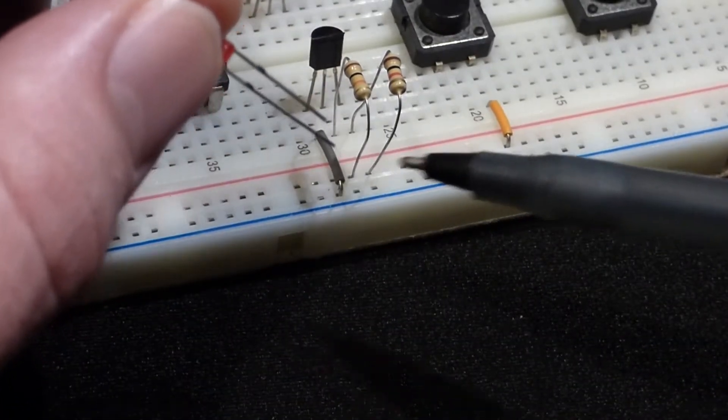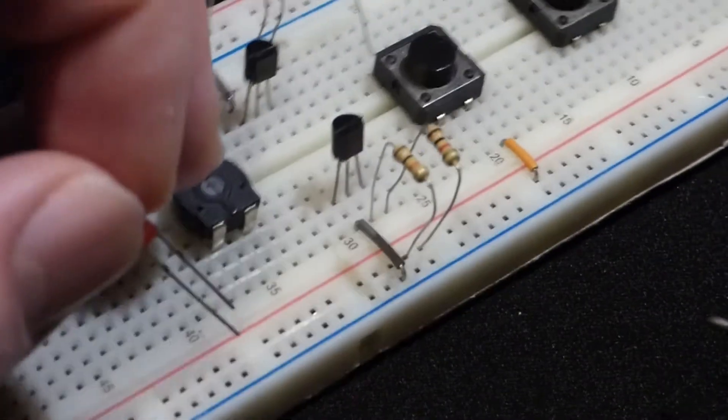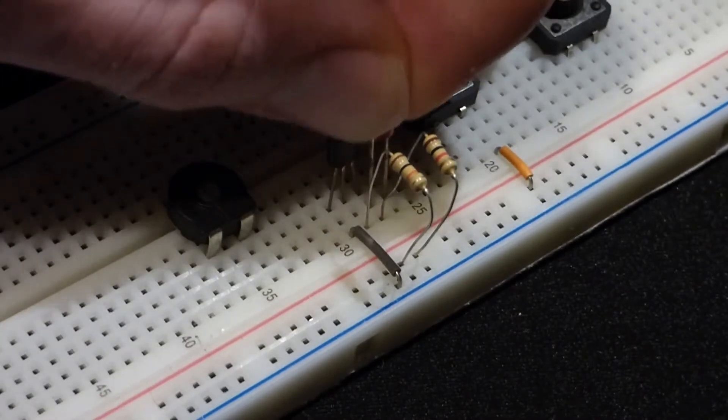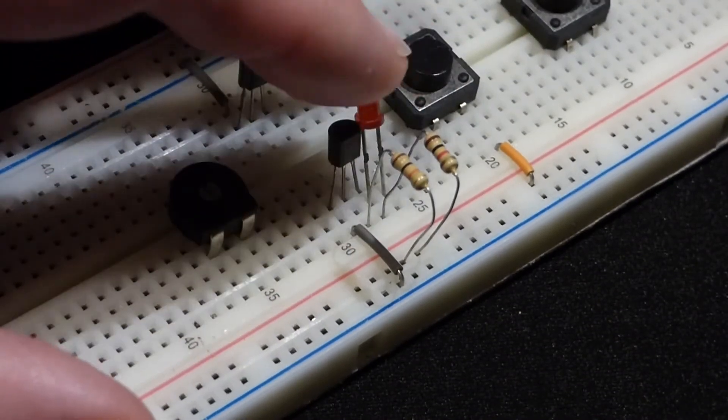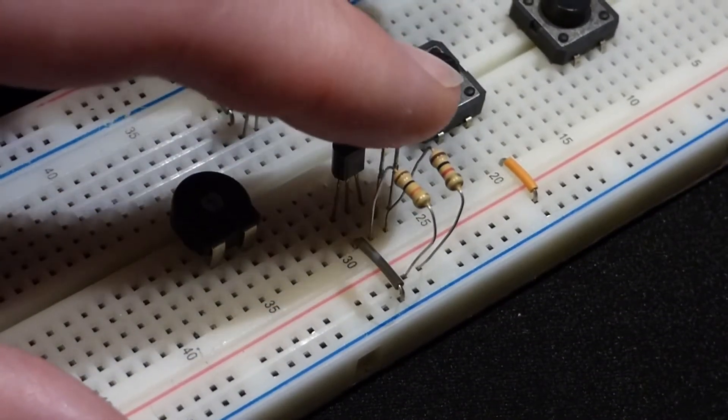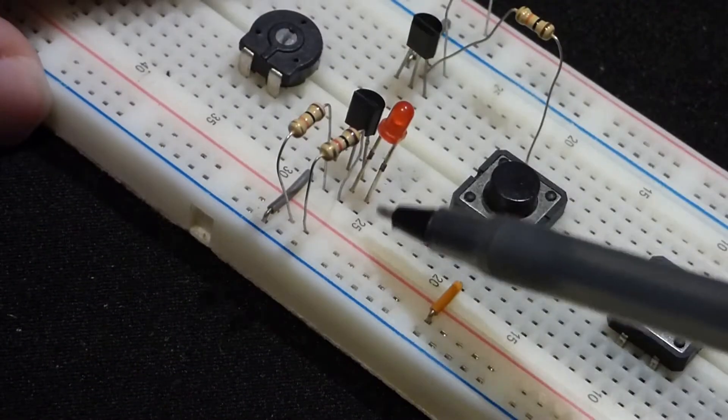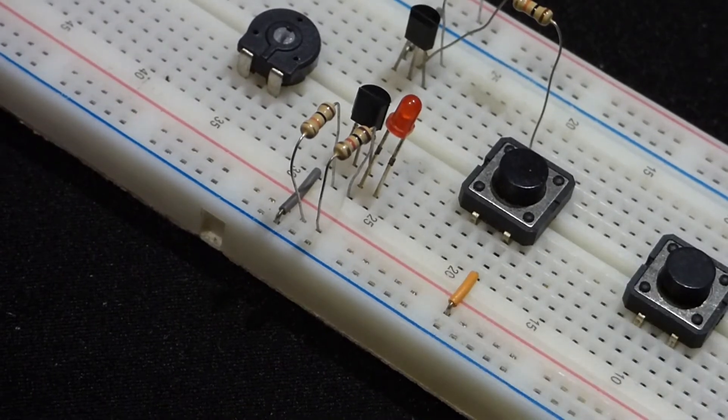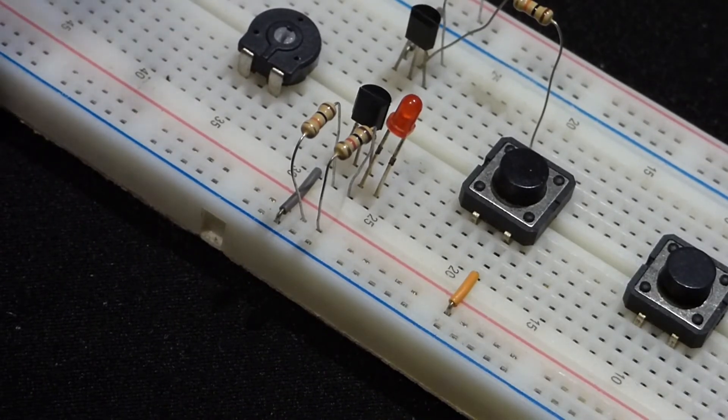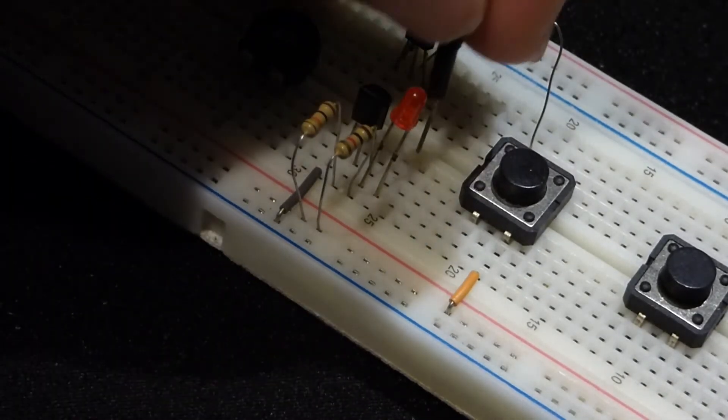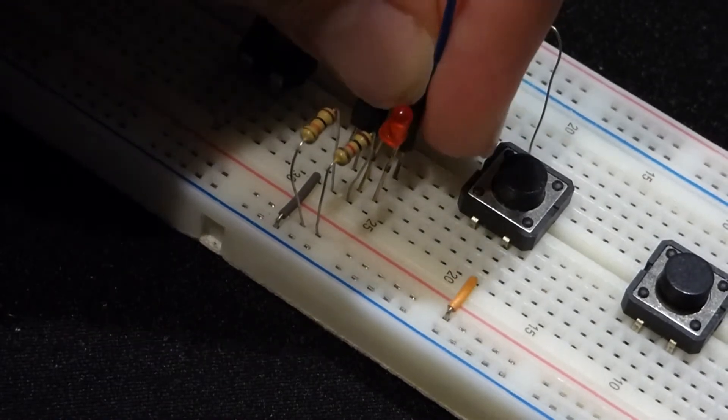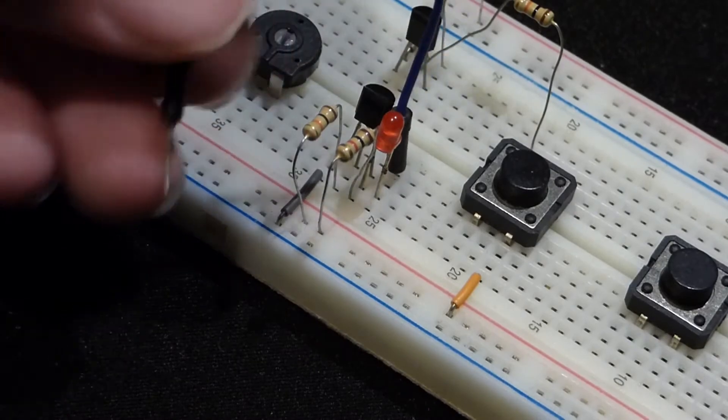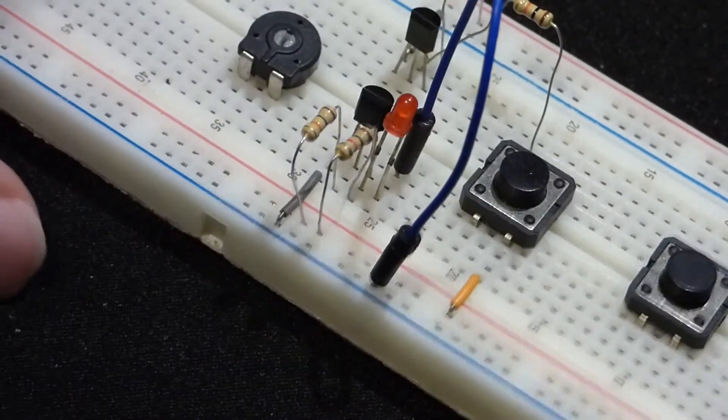So you can see here we got positive coming to the collector there. And so we need the long lead of the LED, the anode, plugged in to the same row as the collector of the transistor. And so now the shorter lead, the cathode over here, which needs to be more negative for it to conduct, we're just going to use a jumper wire. Plug that into the same row. I'll plug it back here, just easier to see what's going on right now, and then just directly to the negative rail.